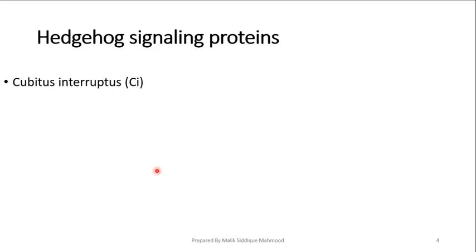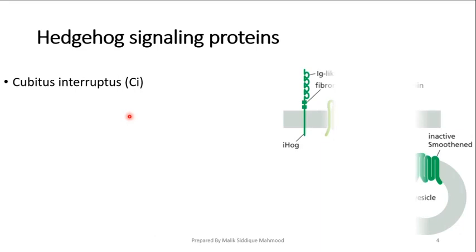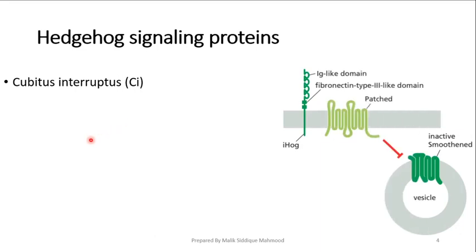Cubitus interruptus acts just like beta-catenin which we have learned about in Wnt protein. Beta-catenin is a protein which is degraded when gene expression is not required. And when gene expression is required, beta-catenin is not degraded. CI is a protein which is also degraded through this signaling.